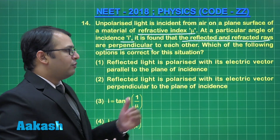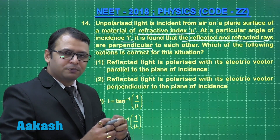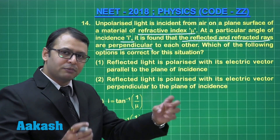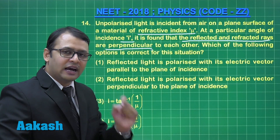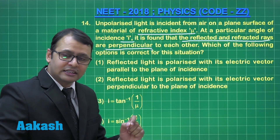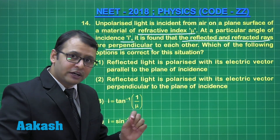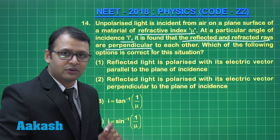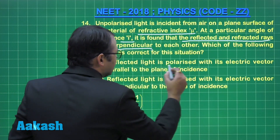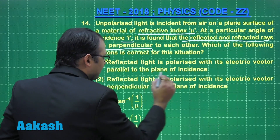As per Brewster's law, when unpolarized light falls on a material and the reflected and refracted rays are perpendicular to each other, the reflected ray is polarized but the electric field vector is perpendicular to the plane of incidence. So the first option — reflected ray polarized with its electric vector parallel — is wrong.